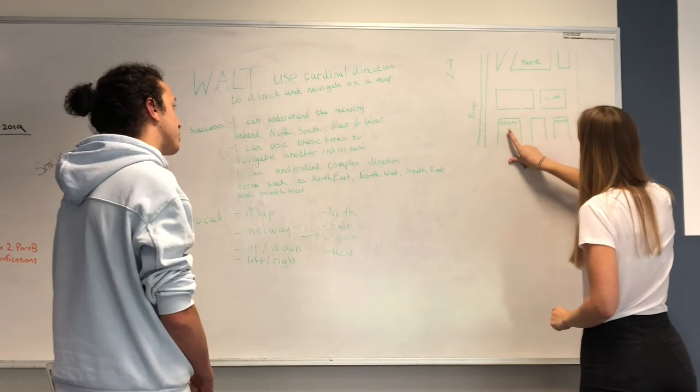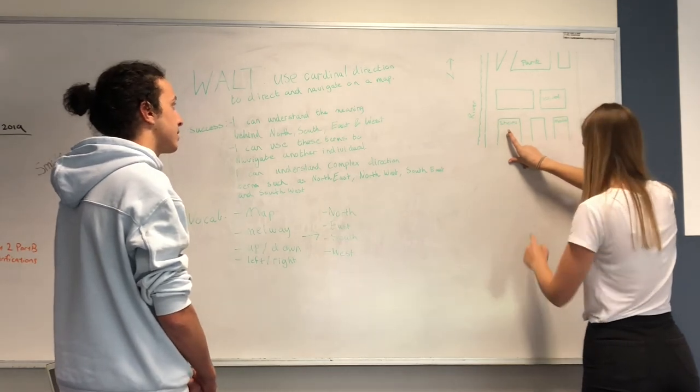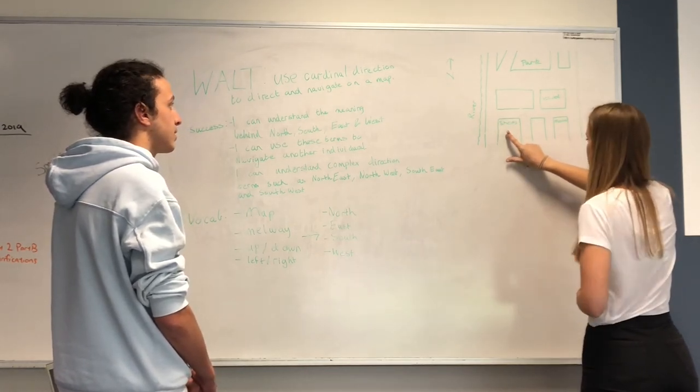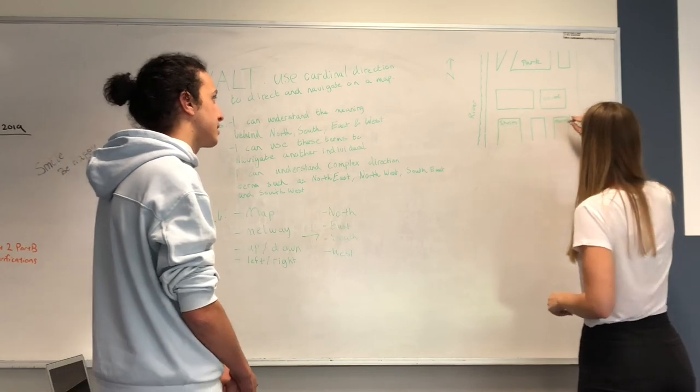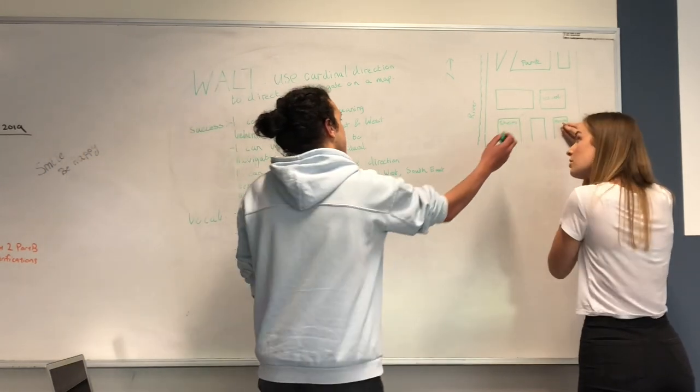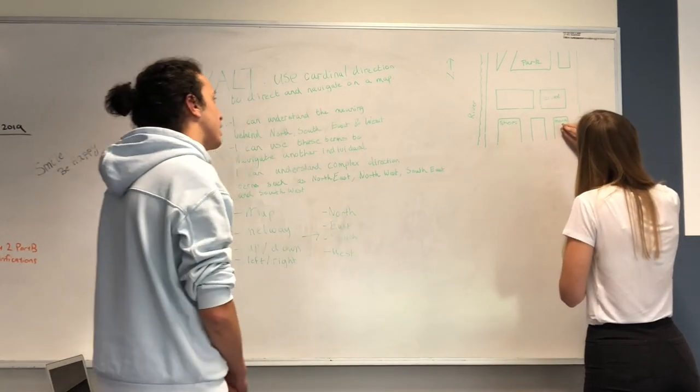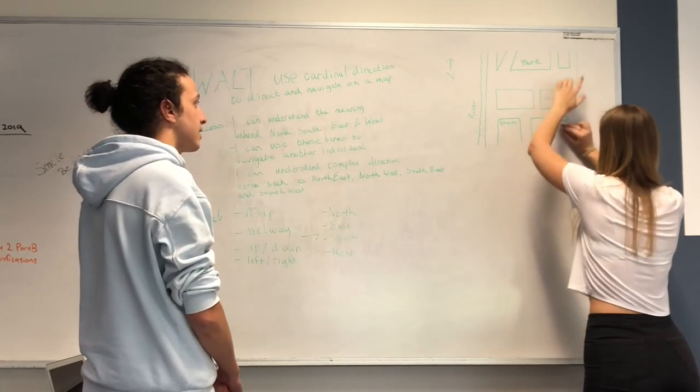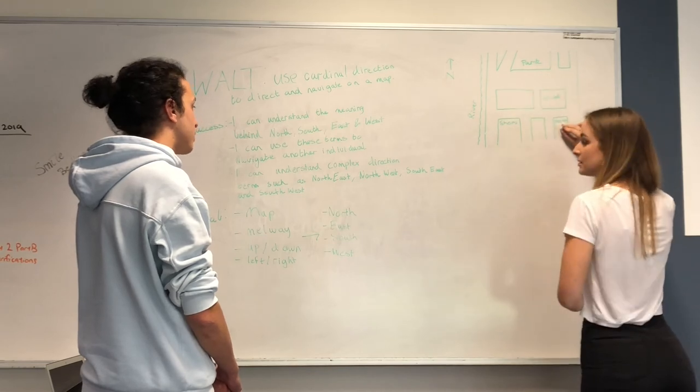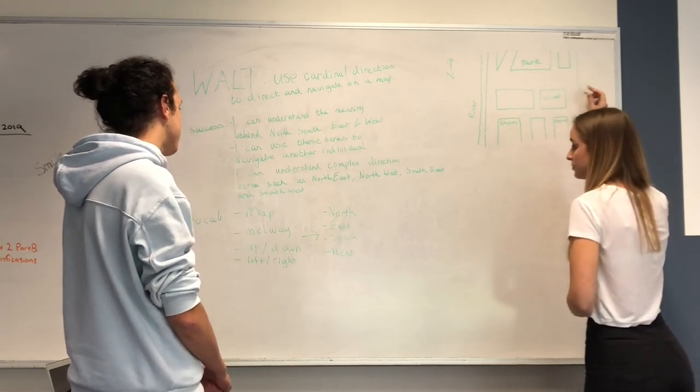So we're going to go to the shops. From the shops, which way would the movies be? East. If we have our little man here, which way would the park be? Northwest.